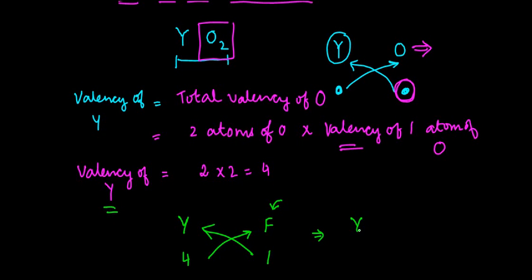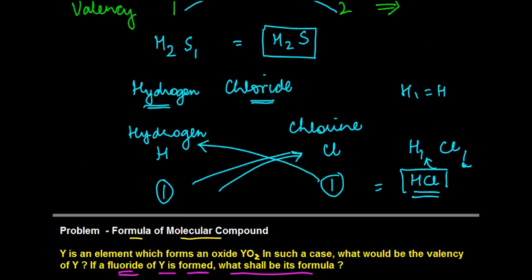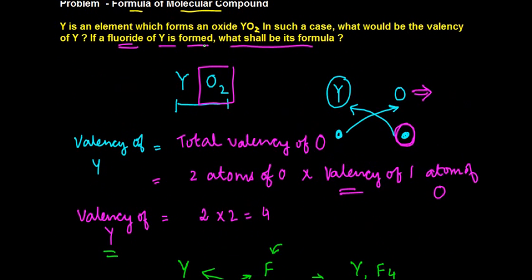So we will have Y1F4 or simply YF4 as the formula which is going to come in for a fluoride of Y, right? So these are the simple rules we understood earlier, which we have applied now.